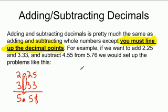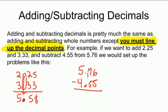If you want to subtract them, you would do 5.76 minus 4.55. Same thing. The decimals are lined up and it comes straight down into the problem. 6 minus 5 is 1, 7 minus 5 is 2, 5 minus 4 is 1.